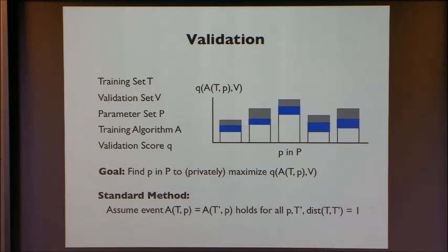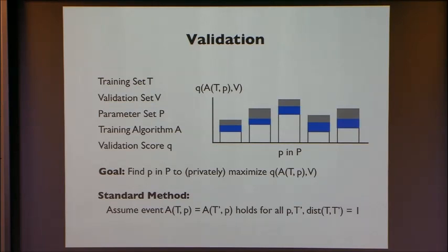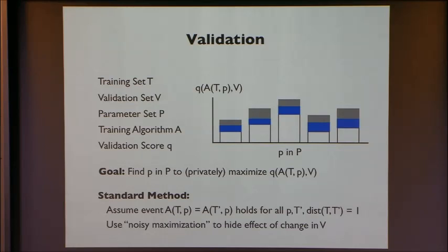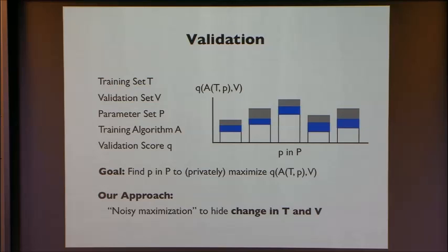That is key in our approach. In the standard method, you would assume the event A(T, p) = A(T', p), where T' is one step away from T. Assuming this event holds, you would use some kind of noisy maximization to hide the effect of a change of one person's value in the validation set. What we do instead is use noisy maximization to hide the change in T and V together. That is the key idea behind this work.